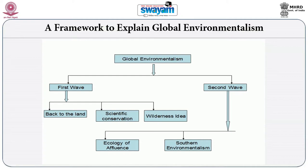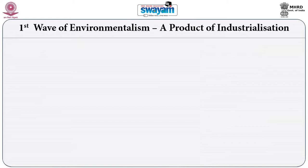Let us begin with the first wave of environmentalism, which is divided into three strands: back to the land, scientific conservation, and wilderness ideas. The first wave of environmentalism emerged side by side with the industrial revolution. Ramchandra Guha considers environmentalism as an initial response to the industrial revolution itself. We need to understand the industrial revolution and its impact to understand the emergence of environmentalism.